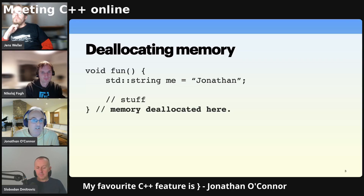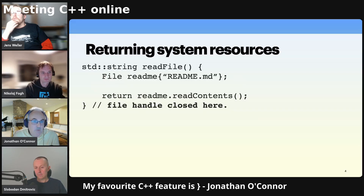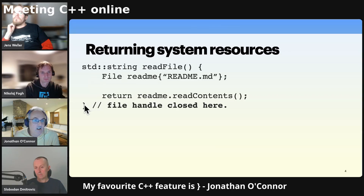Just to show you — here's a string. It does some memory allocation. And at the end of the function, when the function exits, the destructor for the string is invoked and the memory is deallocated. And if we have a file which opens a file handle in the constructor, again, in this read file function, when it exits at the close curly bracket, the file handle will be closed. The destructor for the file class will be invoked at that point.